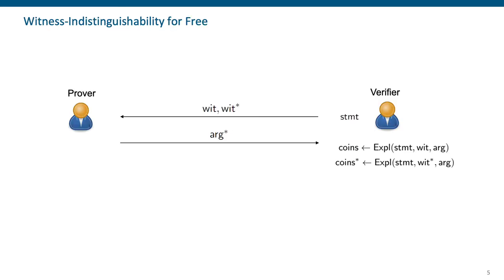Why are these two definitions interesting? Because if we have a malicious setup or malicious verifier explainable argument system, it immediately implies witness indistinguishability. To see this: the verifier sends two witnesses to the prover as in the WI game, and the prover responds with one proof. Because we have explainability, there exist random coins and coins-star that can explain both witnesses. Therefore the prover could have used either set of coins, and the verifier has no means to determine which witness and which coins were actually used.